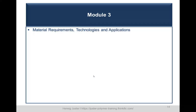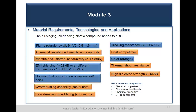In module three, we talk about plastic material requirements, technologies, and applications. In electric cars, electrical properties, flame retardant levels, chemical properties, and comparative tracking index requirements are all increasing. We will discuss in detail: flame retardancy, EMI shielding, overmoulding of parts, how to prevent electrical corrosion, and tracking resistance — all new requirements that need to be fulfilled.